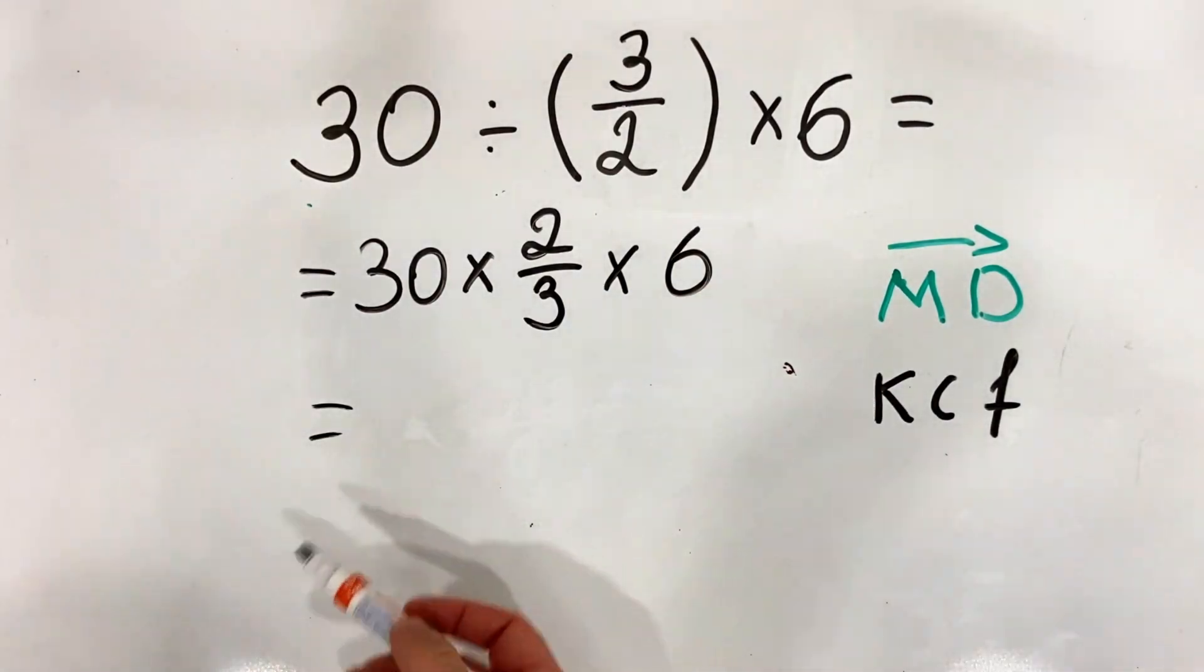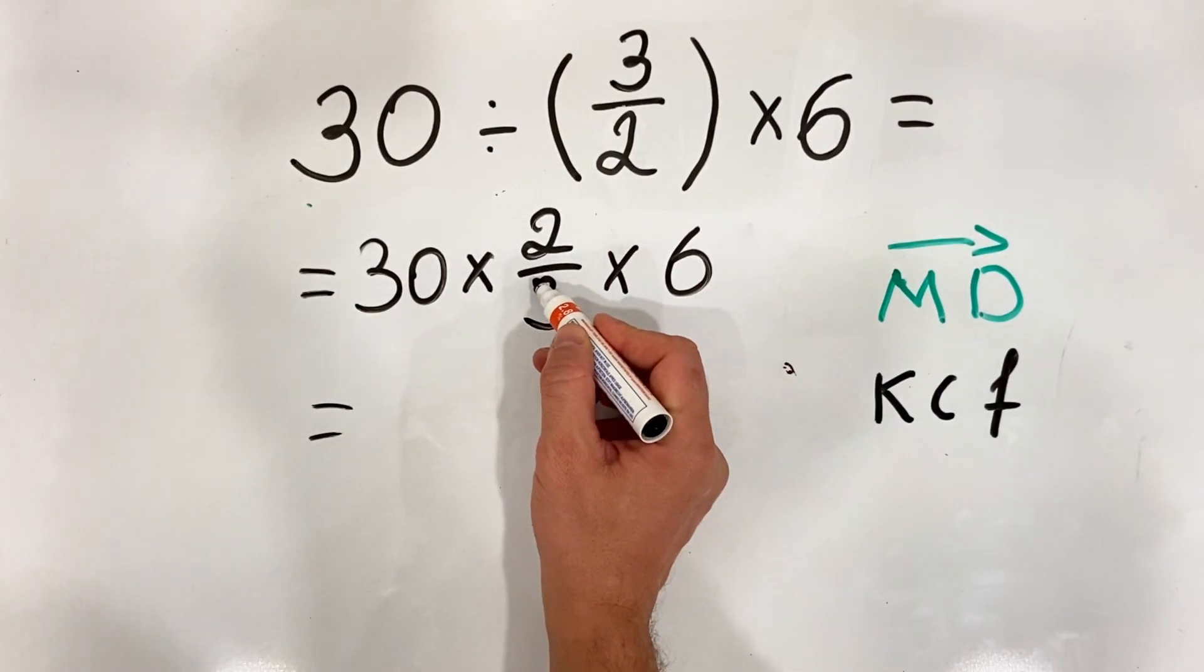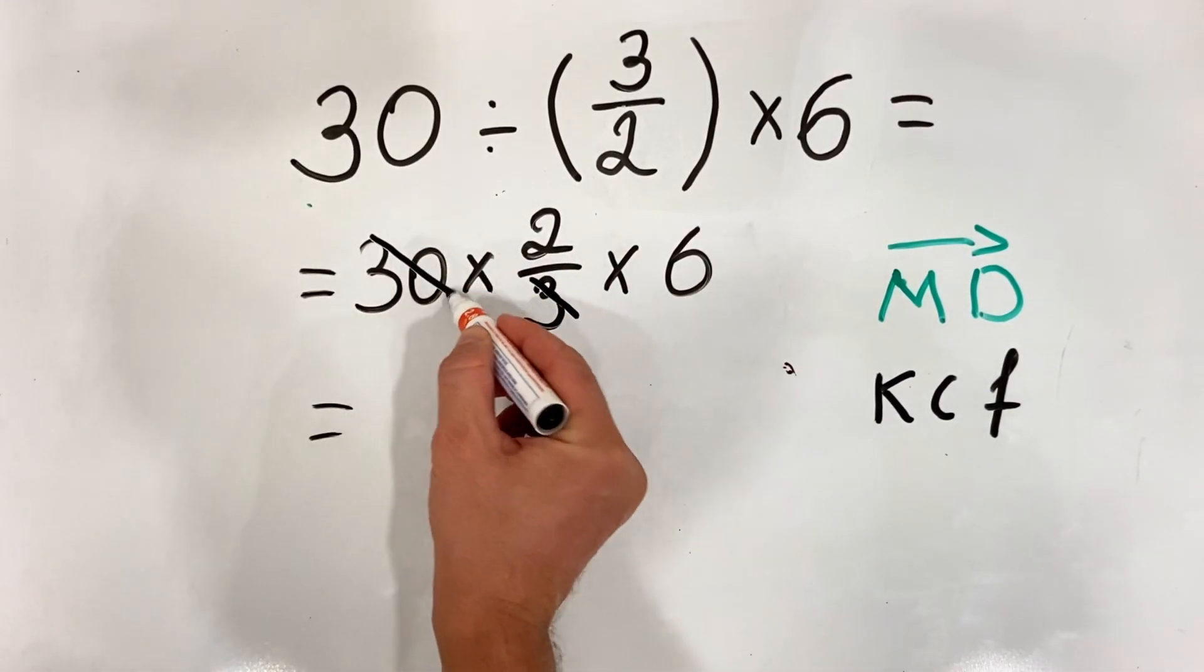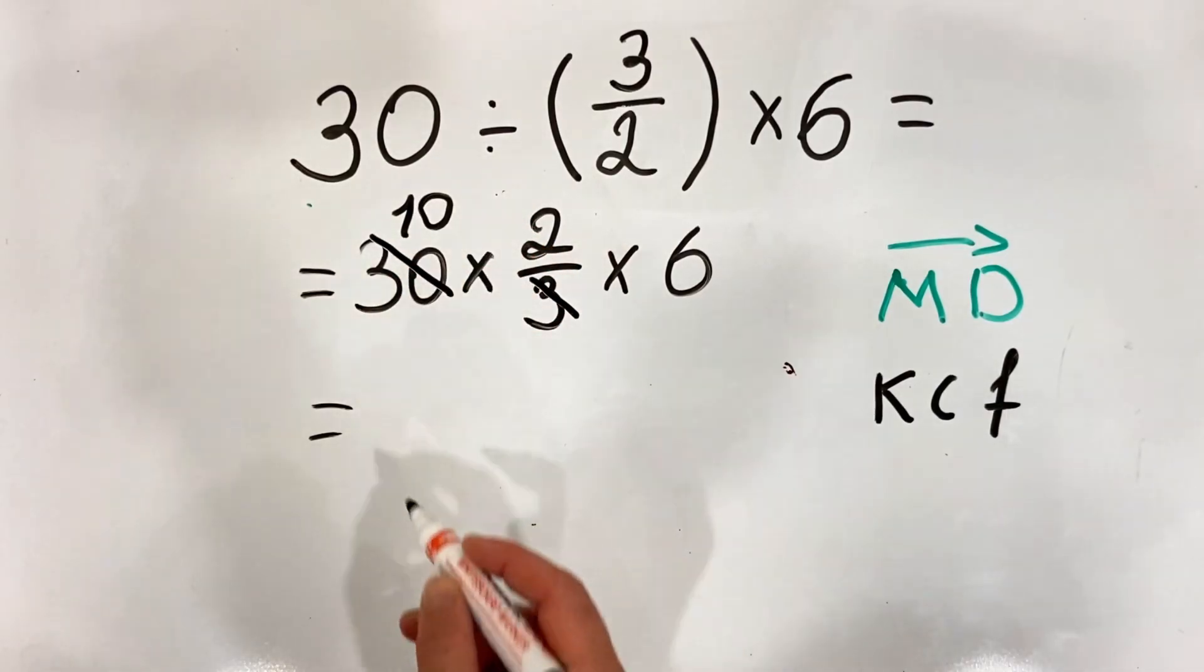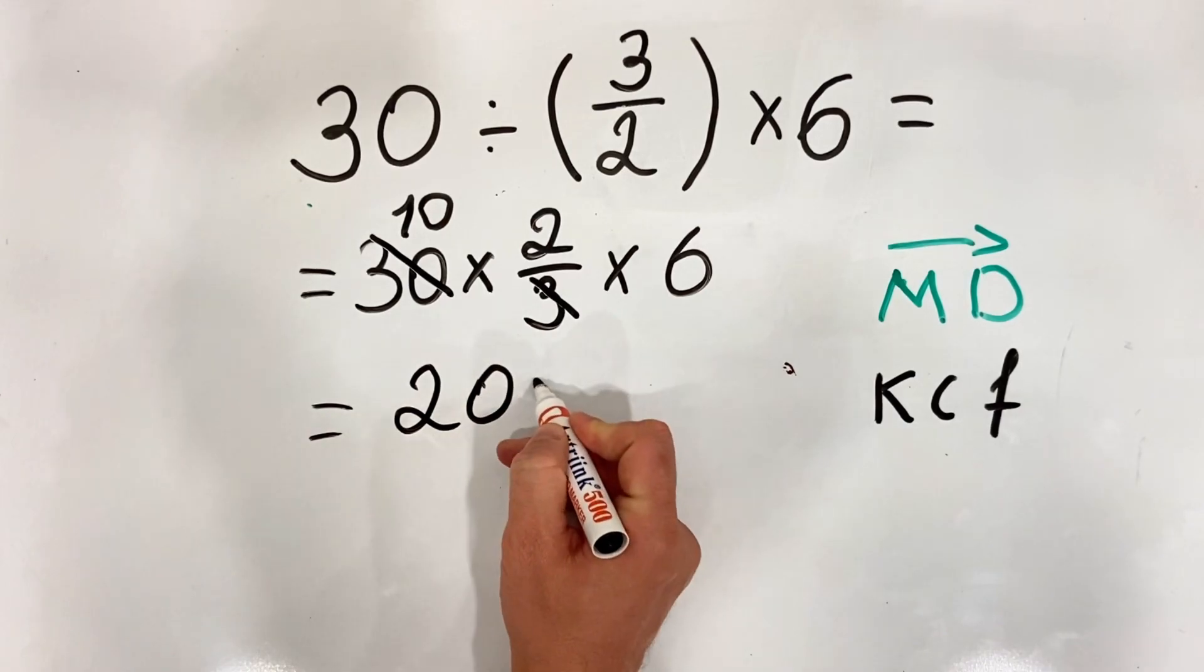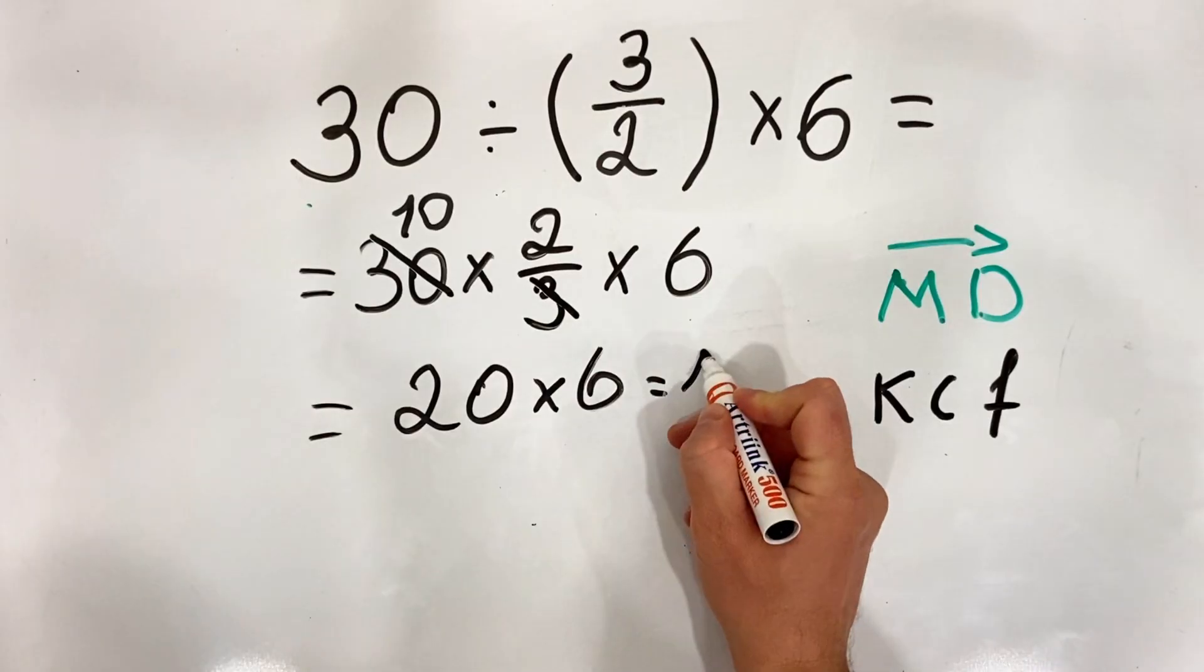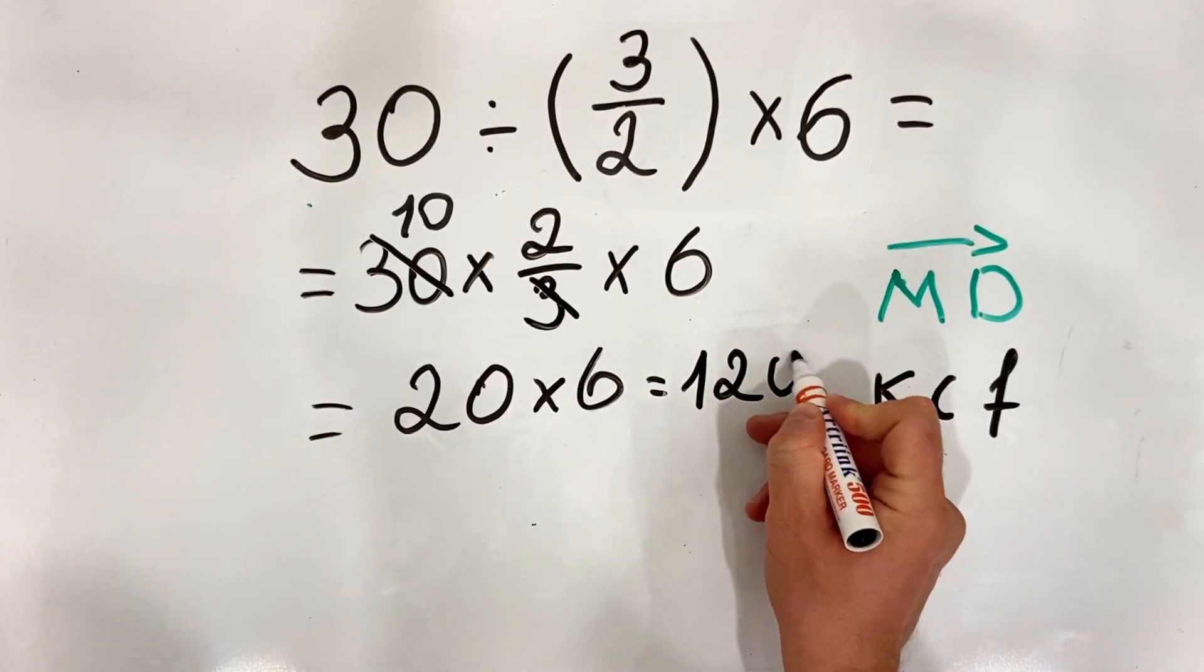Now what we have is 30 multiplied by 2 over 3, then multiplied by 6. We simplify by 3 and get 10. 10 multiplied by 2 equals 20, multiplied by 6, and the answer is 120.